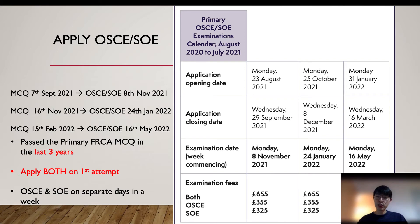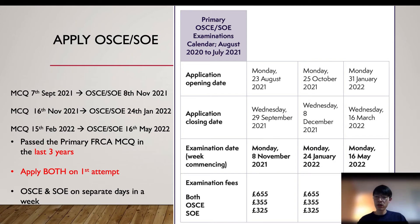After passing the MCQ, you can apply for the OSCE and SOE. Like the MCQ, there are three sittings each year, usually one to two months after the MCQ. You can pass the entire exam within three months, or complete your OSCE and SOE any time within three years after the MCQ. For your first attempt, you must apply for both the OSCE and SOE; if you fail either one, you can apply that component on your second attempt.